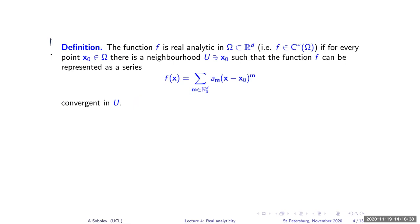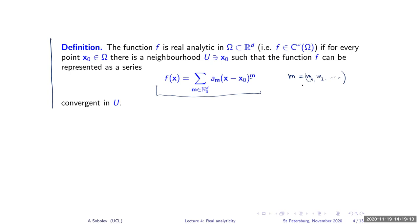I decided I should include some of this elementary material in the lecture. This is a mini-course, not a seminar talk, so I do not assume that everybody knows everything. Here is the definition of a real analytic function — a very simple definition. A function is said to be real analytic if it can be represented by its convergent Taylor series in a neighborhood of every point in the domain. The multi-index notation m is the collection of variables used here.